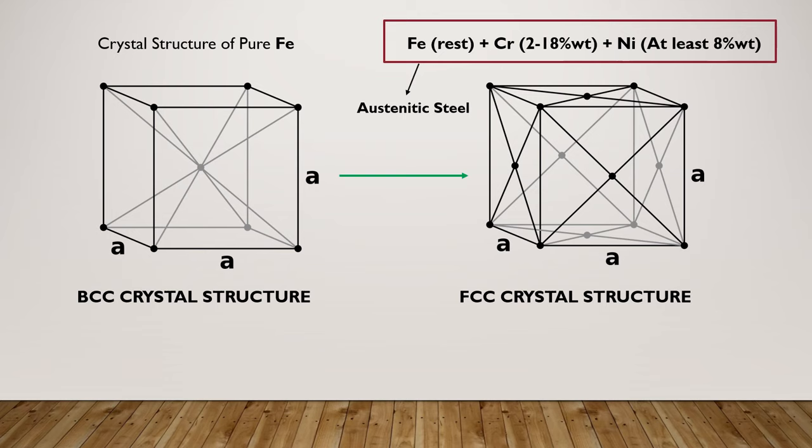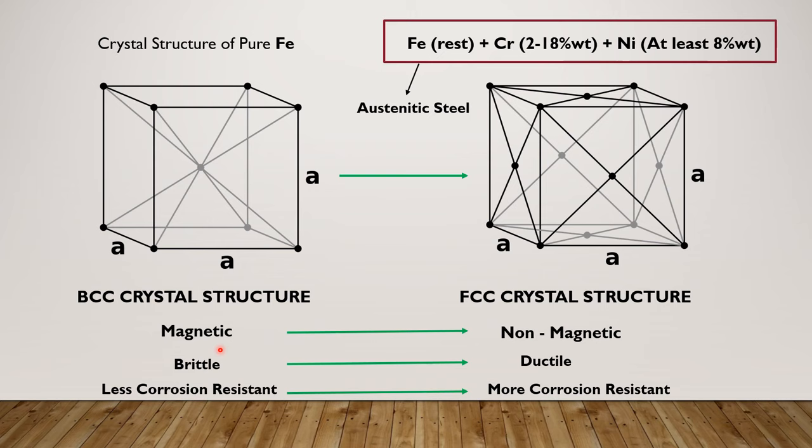Because of this change in crystal structure, its mechanical and physical properties would change entirely. For example, this material would become magnetic to non-magnetic, brittle to ductile, and less corrosion resistant to more corrosion resistant. So the strong knowledge of crystal systems is really necessary to have a better understanding about the behavior of materials.